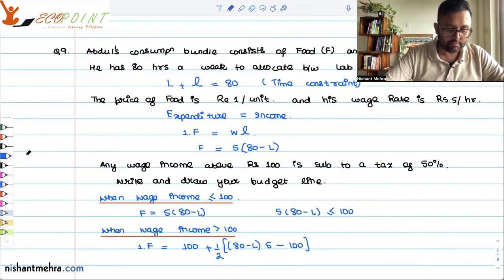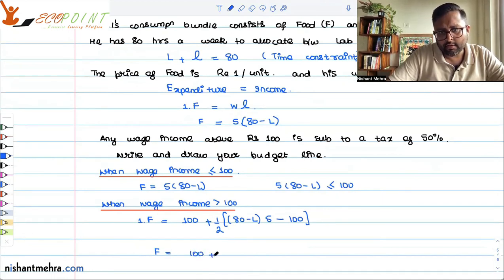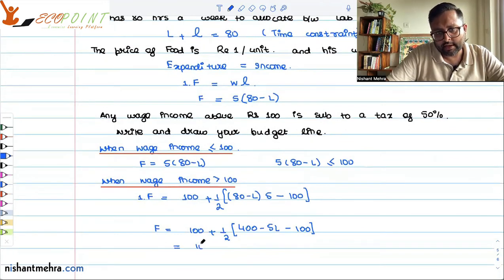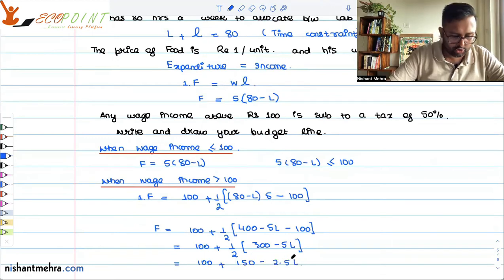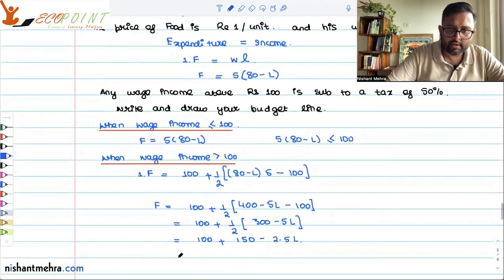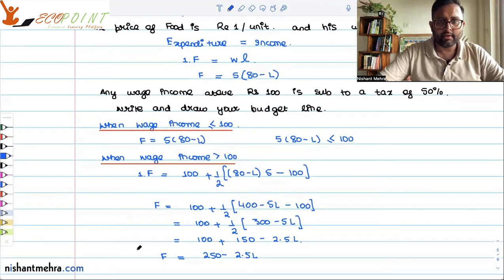For example, if wage income is 150, extra income above 100 is 50, which is taxed at 50%, leaving 25. So income becomes 100 plus 25 = 125. Generalizing: F equals 100 plus half of (5(80 minus L) minus 100), which simplifies to 100 plus half of (400 minus 5L minus 100), giving F equals 250 minus 2.5L.